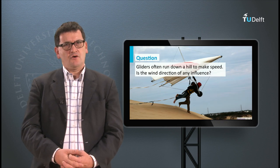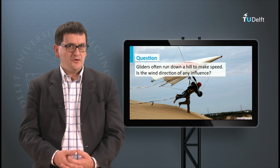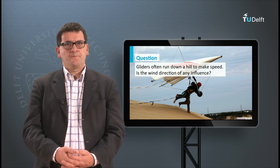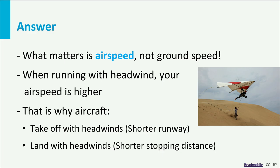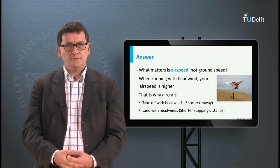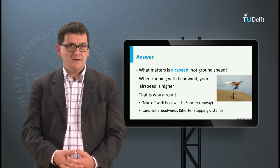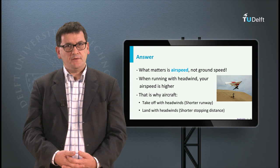Another question: gliders often run down a hill to generate speed — do you think that the wind direction is of any influence? The answer is yes. What really matters is airspeed, so if we run downhill with a headwind, your airspeed is higher and you can generate more lift. That is also the reason why aircraft preferably take off or land with a headwind. In both cases the required length of the airstrip is minimal.